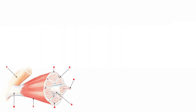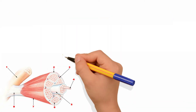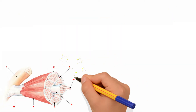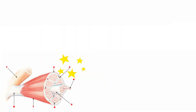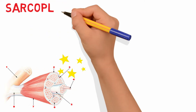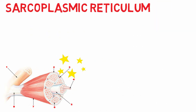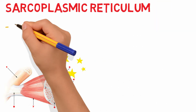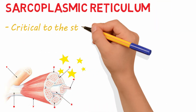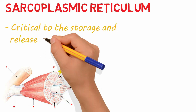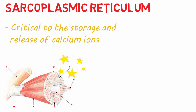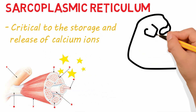In skeletal muscle cells, the smooth ER has a special role. In fact, it is so special it gets a different name: the sarcoplasmic reticulum. It is critical in the storage and release of calcium ions involved in muscle contraction.